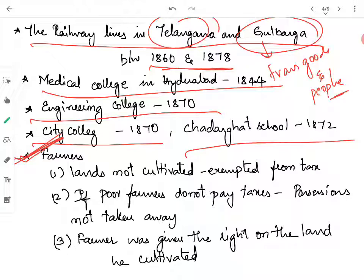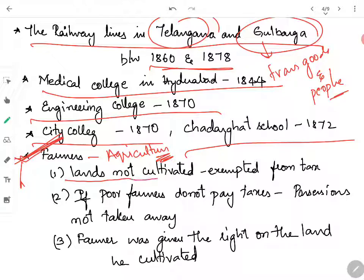In those days, agriculture was the major factor responsible for the financial conditions of the state — unlike today where we have service-based, industrial, and manufacturing sectors. So he made sure farmers were happy. The first important reform he made was that lands not cultivated were exempted from tax. That is, if there is no rain and a farmer does not want to cultivate the land to avoid losses, he does not have to pay taxes.